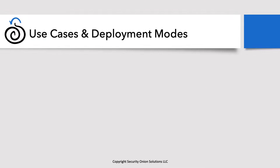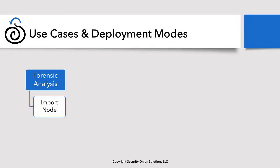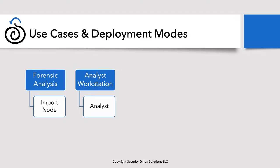Let's look at use cases and deployment modes. There are many different ways to use Security Onion. The first is forensic analysis — if you want to stand up a small virtual machine and run forensic analysis using PCAPs or other logs, that would be an import node. You can easily import a packet capture and all the network tools will generate alerts — Zeek will generate data based on that packet capture. The second is an analyst workstation deployment mode.